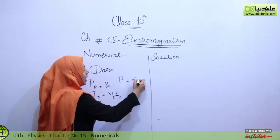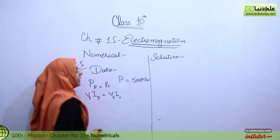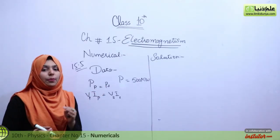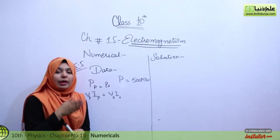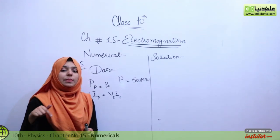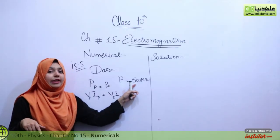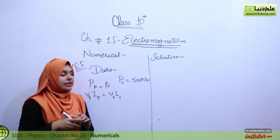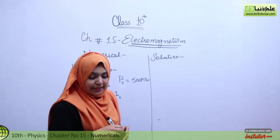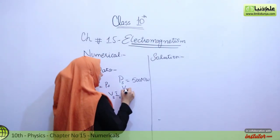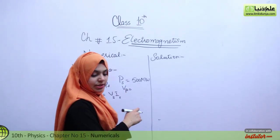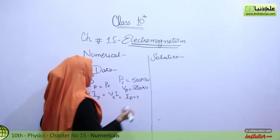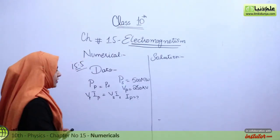The given data: power PS equals 5,000 megawatts — this is the power we obtain from the secondary. What we provide goes into the primary; what we obtain comes from the secondary. So PS equals 5,000 megawatts. The input voltage VP equals 250 kilowatts (kilovolts). We need to find IP.